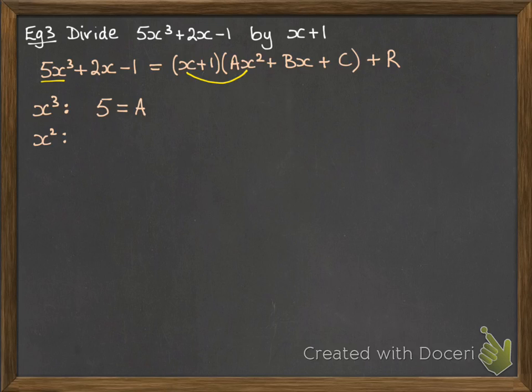If we look at x squared, we've got no x squareds on the left, but we can make an x squared on the right by doing ax squared times 1 and bx times x. So we get b is equal to minus 5, since we already know that a is 5.